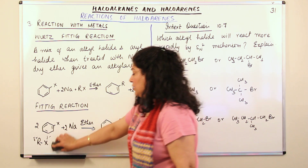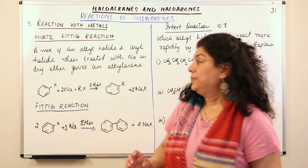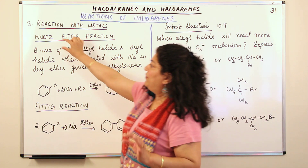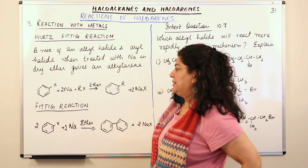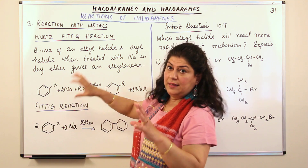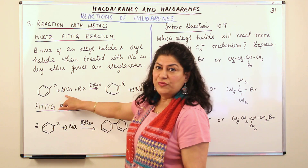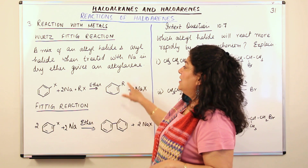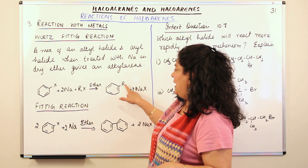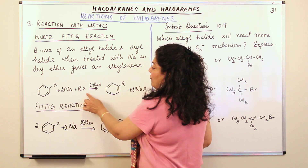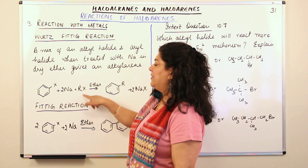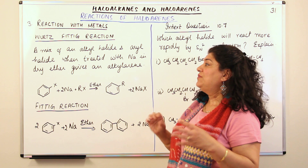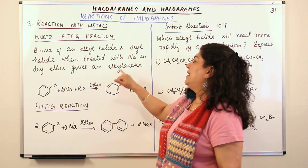However, the Wurtz reaction does take place in the case of haloarenes. In the Wurtz-Fittig reaction, a mixture of an aryl halide and an alkyl halide reacts with sodium in the presence of dry ether, resulting in the formation of an alkylarene. The sodium and the halogen form a salt and get separated, while the alkyl and the aryl groups join together. So a mixture of alkyl halides and aryl halides treated with sodium in dry ether gives an alkylarene.